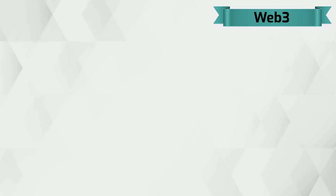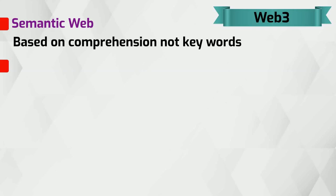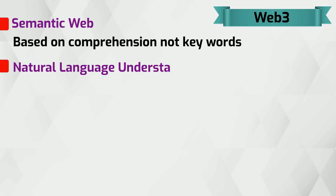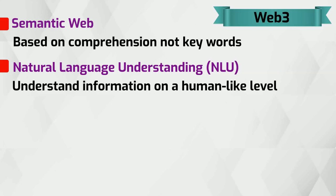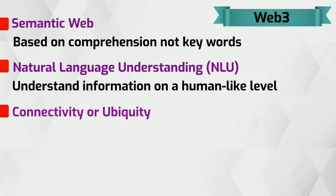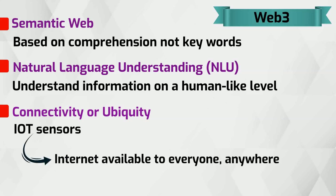To really understand Web 3.0, we need to take a look at its key features. The Semantic Web is developed to create and share content through search and analysis based on comprehension, not keywords. By combining semantic capabilities with natural language processing, computers can understand information on a human-like level to provide faster and more relevant results. Web 3.0 is also based on IoT sensors and makes the internet available to everyone, anywhere, at any time, without the need for a computer or smartphone.